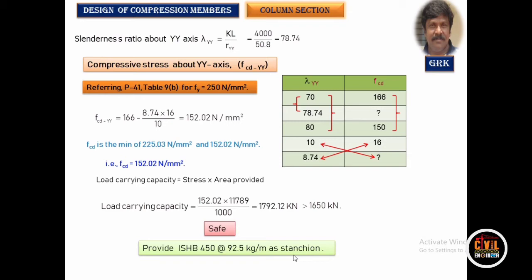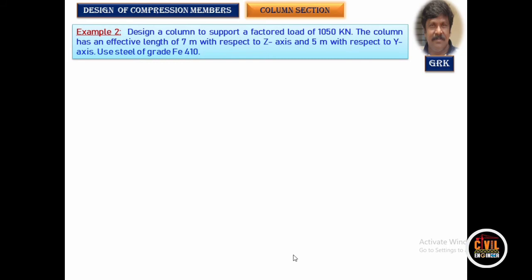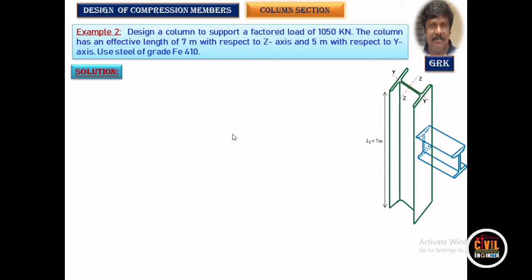Now let us look at the second problem. The load is given as a factored load of 1050 kN. The effective length is given in two directions: along the ZZ direction it is 7 meters and along the YY direction it is 5 meters. A beam has been attached to the column along the YY direction, hence the lesser effective length of 5 meters.